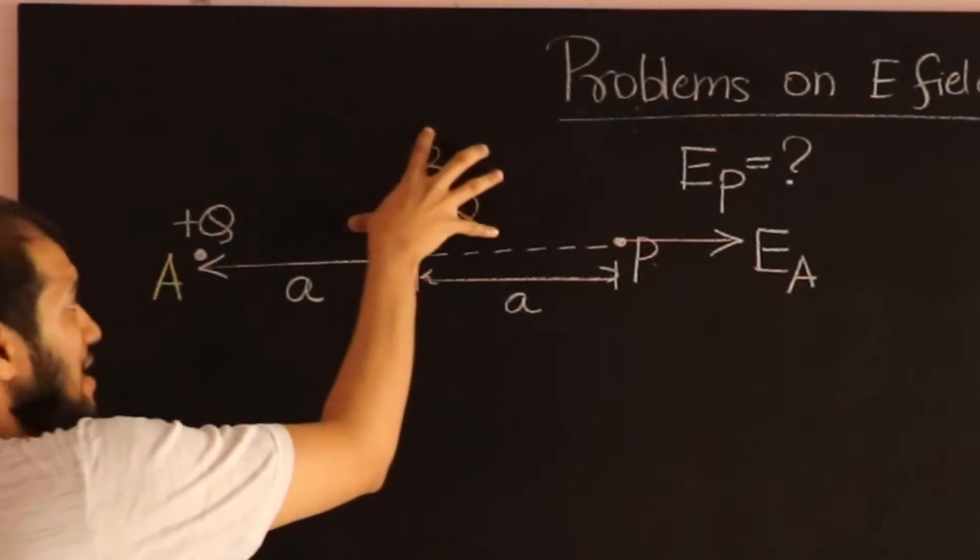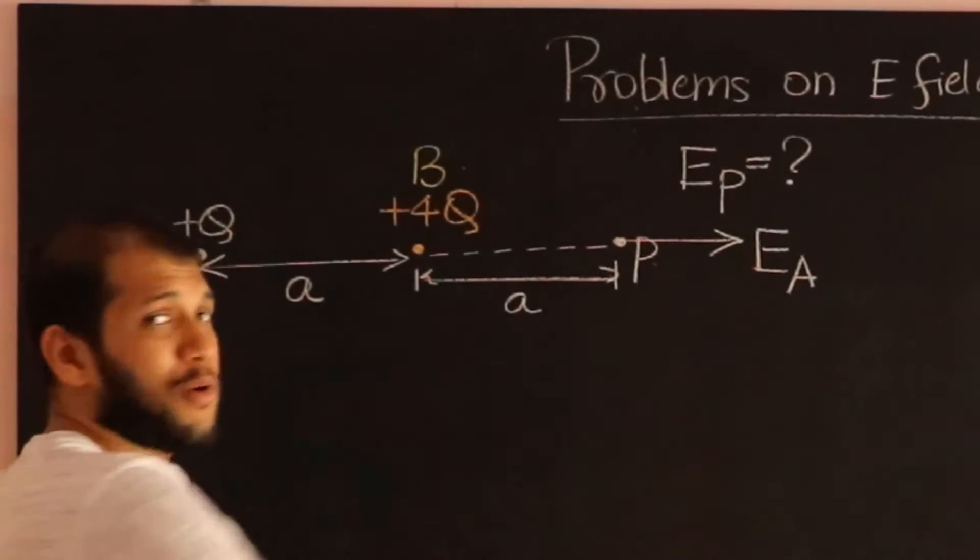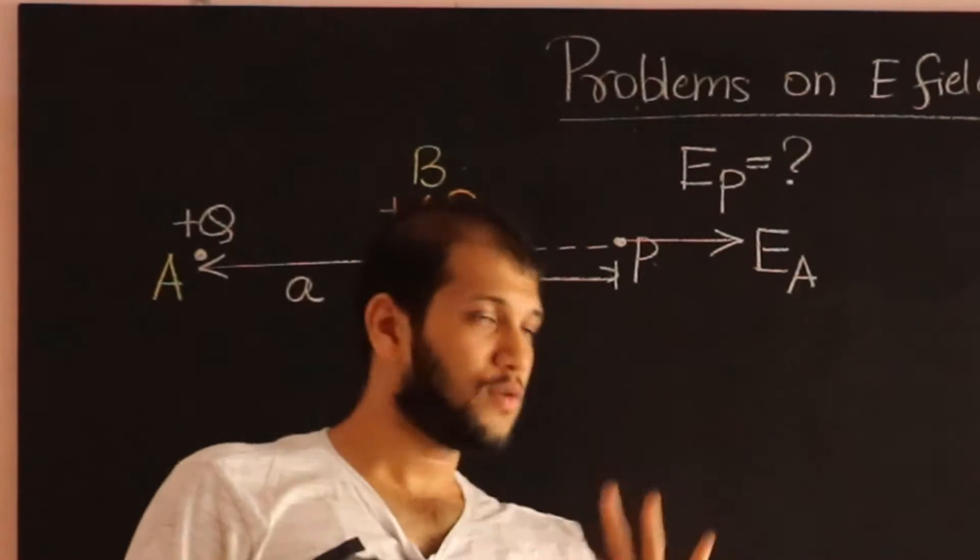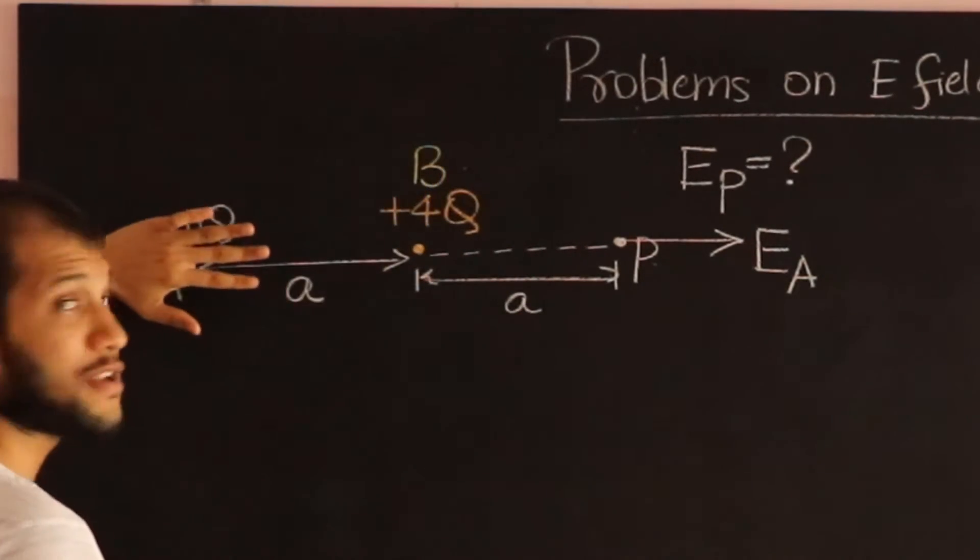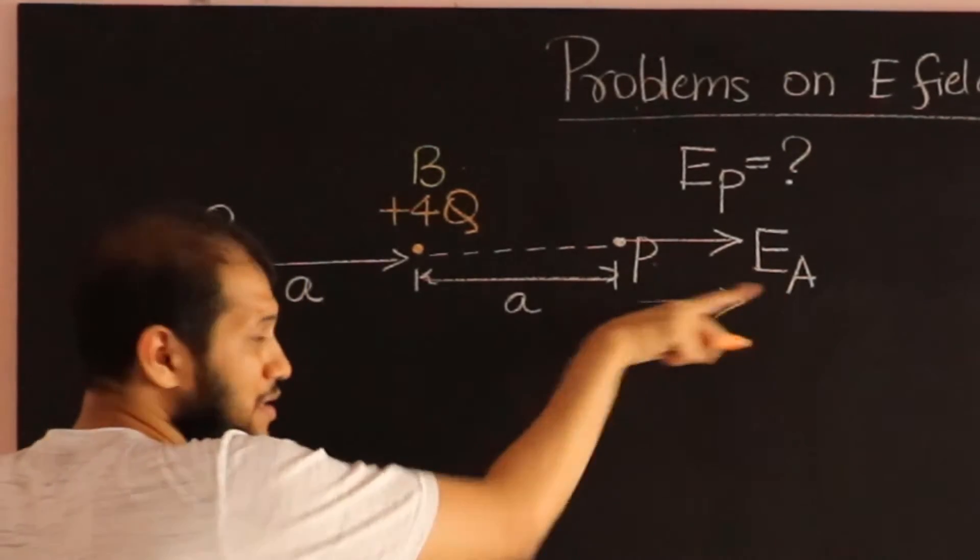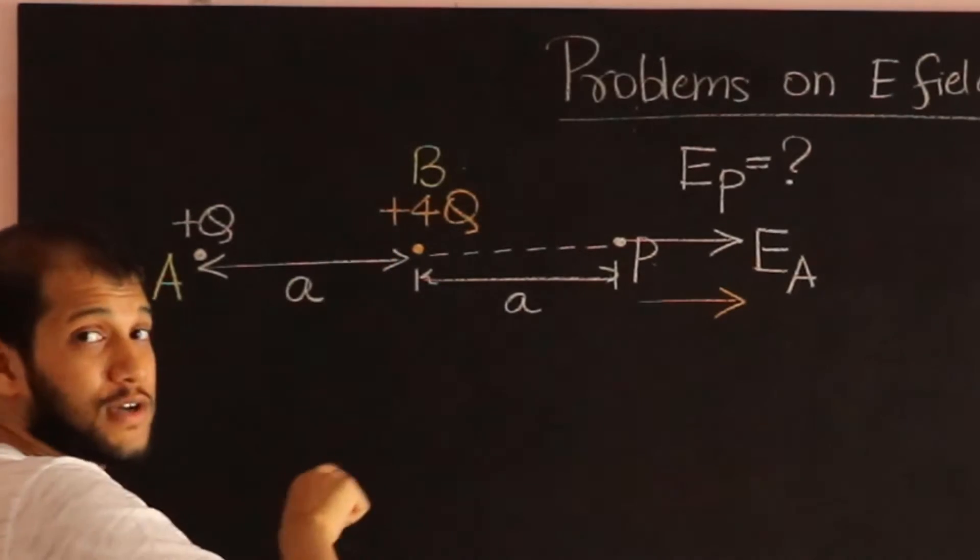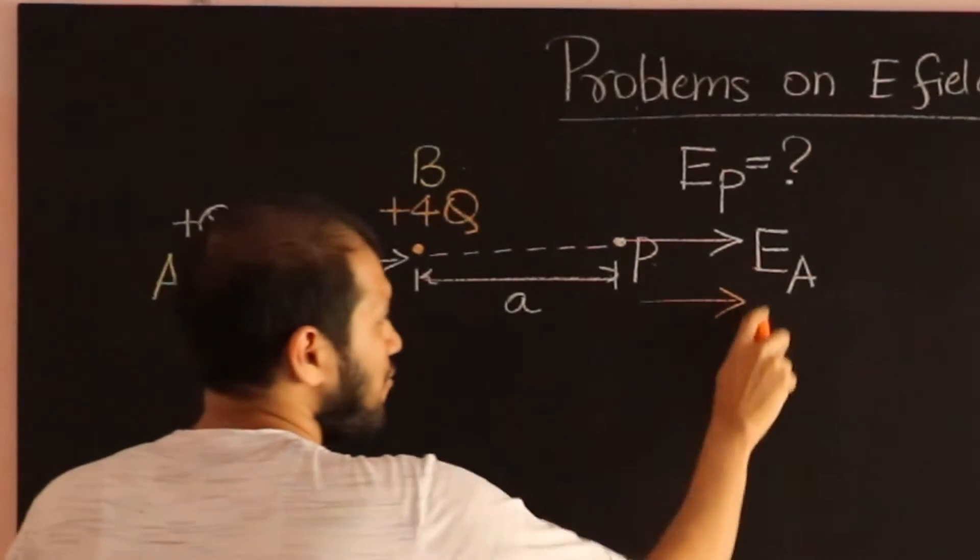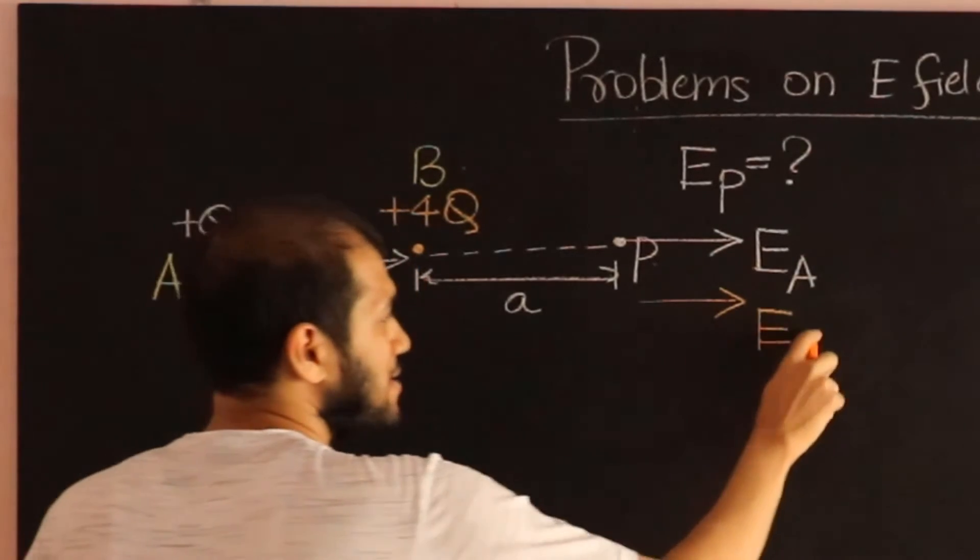Similarly, charge B is going to produce an electric field at point P. When we calculate the electric field alone due to charge B, neglect charge A. That electric field will also be in this direction because it's also a positive charge. Positive charge tends to produce field away. Therefore, this electric field, let me call it E_B.